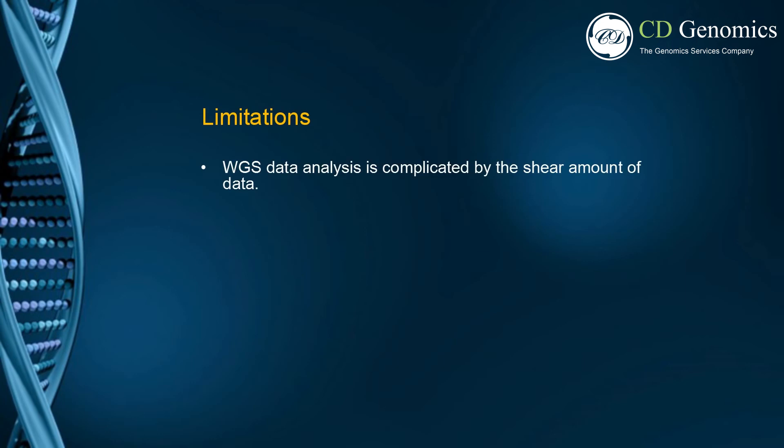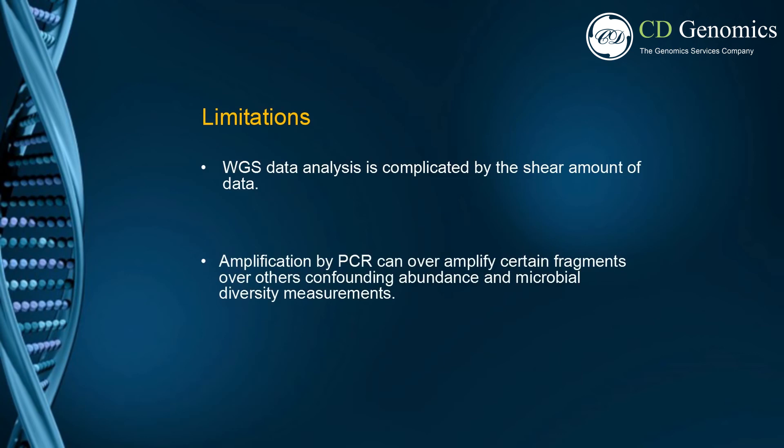Second, one of the biggest considerations for library preparation of environmental samples for shotgun metagenomic sequencing has to do with amplification. Certain types of samples, such as water and swabs, yield small amounts of DNA, necessitating amplification during library preparation. Amplification by PCR can over-amplify certain fragments over others. If you're able to extract enough DNA material, about 250 to 500 nanogram, an amplification-free based library preparation method is recommended.